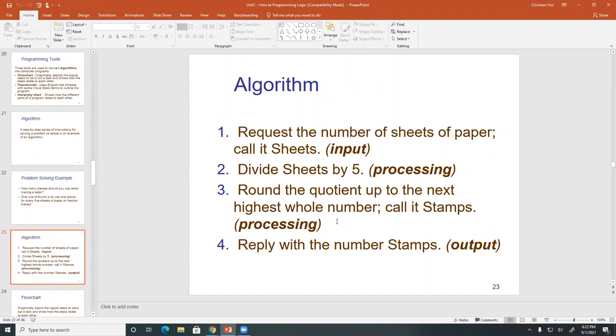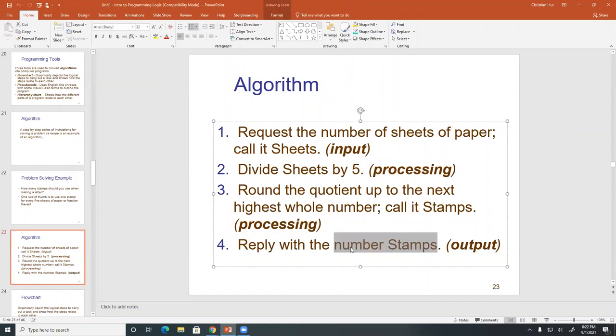And then once you do the processing part, and then you got your answer and then you would output the number, you need how many stamps and that's the output. So again, back to the IPO thing again, right?